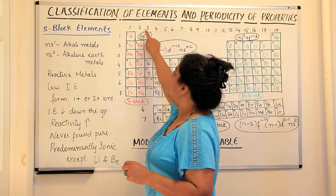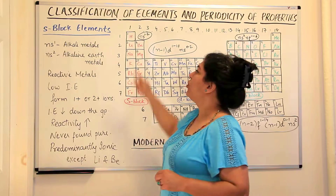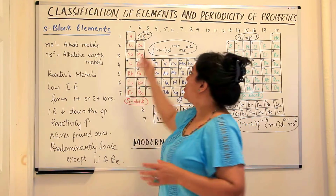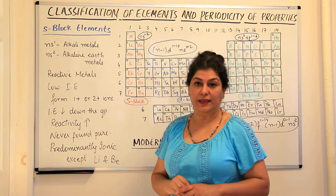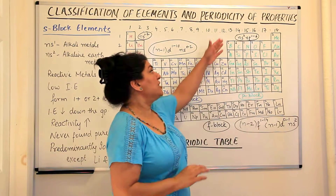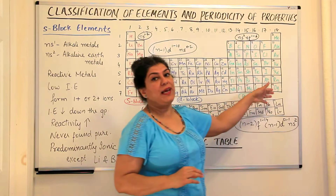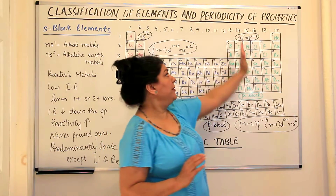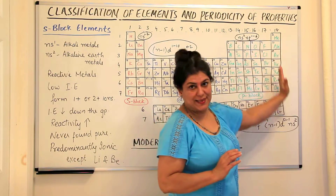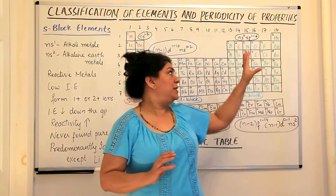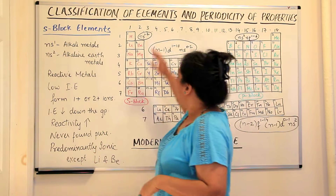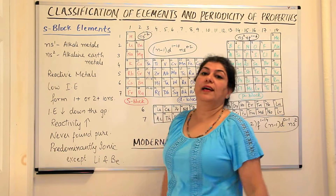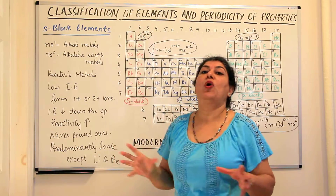You would expect helium to be here because helium has a configuration of 1s2, but since helium has properties which are not at all similar to the alkaline earth metals — rather it has properties similar to the noble gases — it has been placed with the noble gases. We will study the details about it later. So these were the first two groups, the alkali and the alkaline earth metals, and they form the s-block.